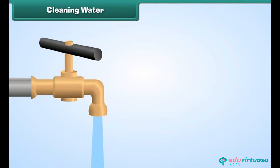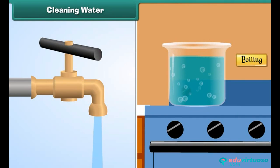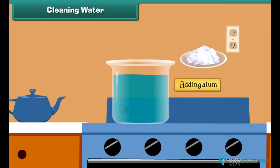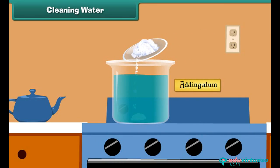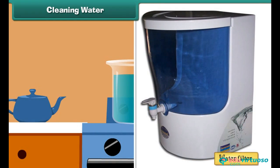We can clean and purify water by boiling it, adding alum to it, adding chlorine tablets to it, or using water filters at home.